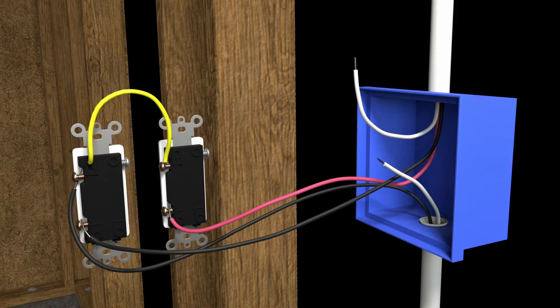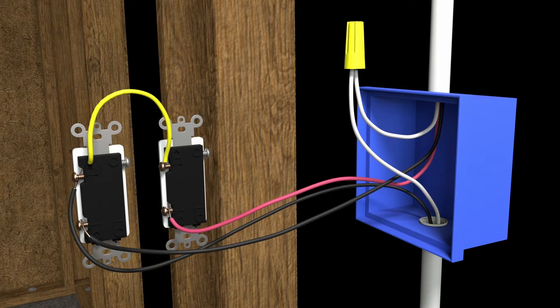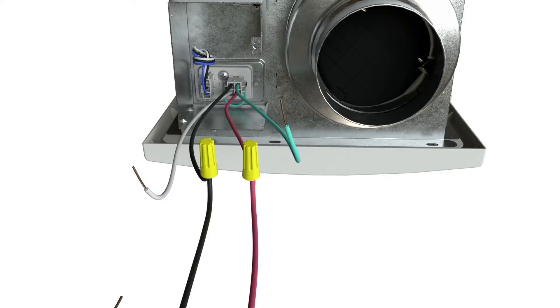The neutral conductor is connected together at the switch box and continues to the fan's junction box where it is connected to the white lead in the fan's junction box.